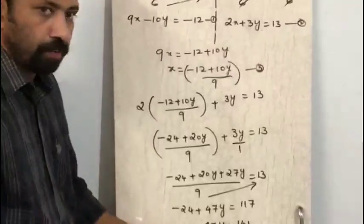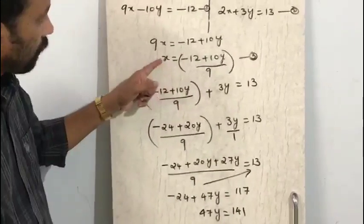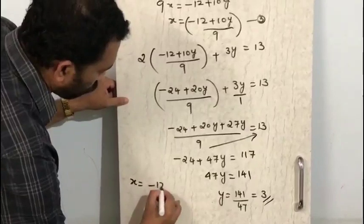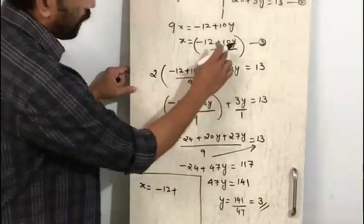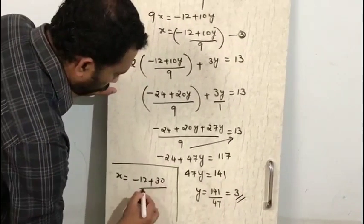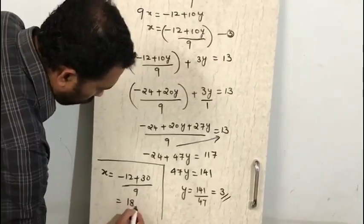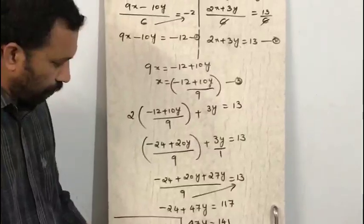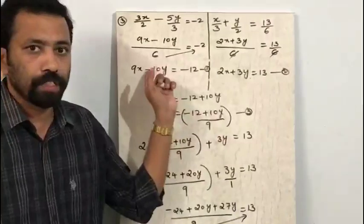This is the value of y. After getting the value of y, we substitute back into equation 3: x equals minus 12 plus 10 times 3, that is minus 12 plus 30 upon 9, which is 18 upon 9, that is 2. So x equals 2 and y equals 3 is the solution of this equation.